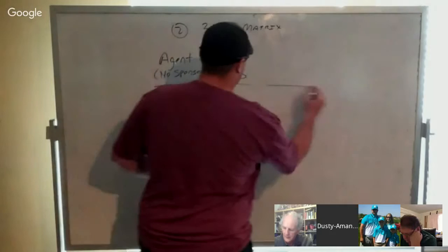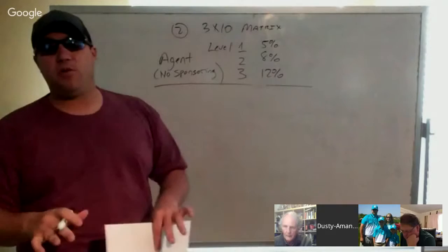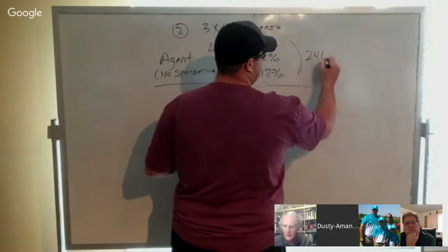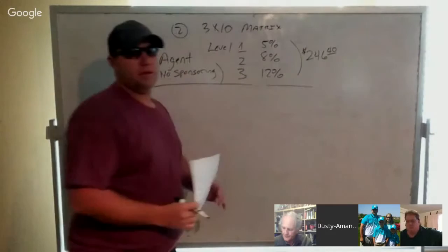And those pay out 5%, 8%, and 12%. So literally, if someone recruited no one, and they were with a builder and their team grew just by default with spillover, they can earn from these three levels $246.40 a month. $246.40 in a residual check with zero sponsoring requirements.